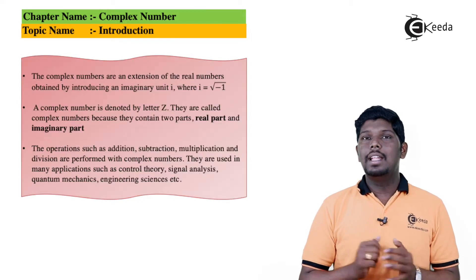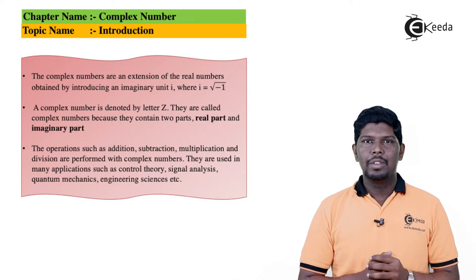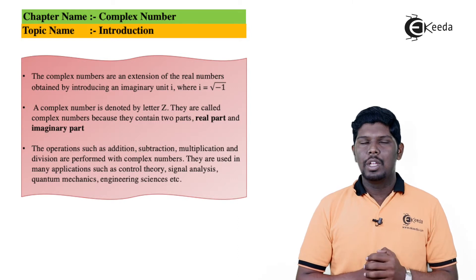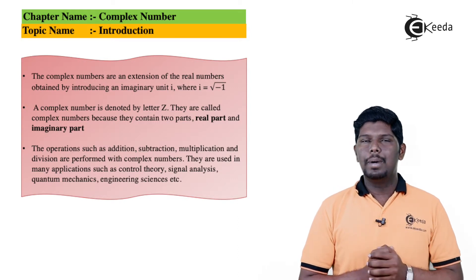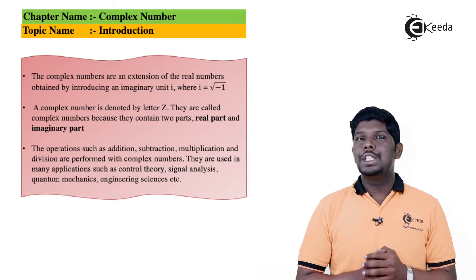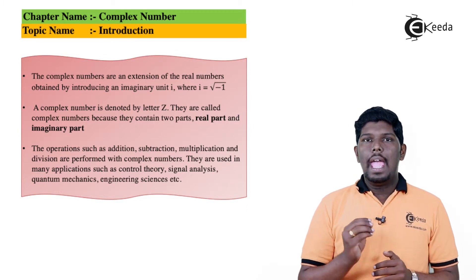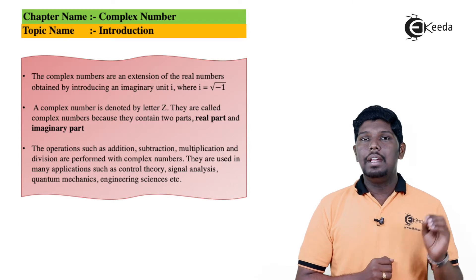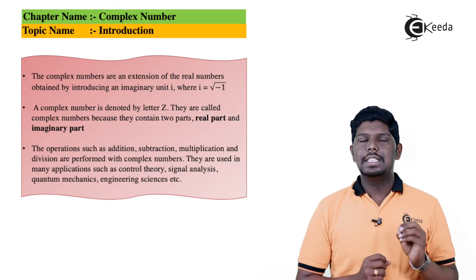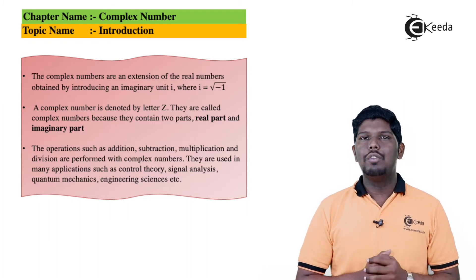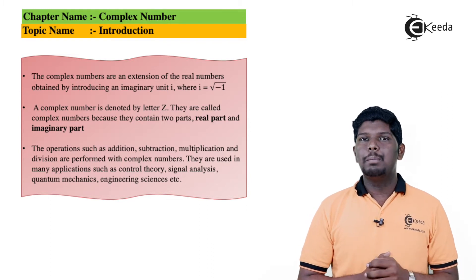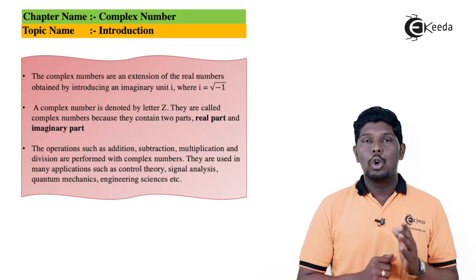Complex numbers are nothing but the extension of real numbers which are further obtained by adding an imaginary term, that is i. We can define a complex number as a part of real number as well as imaginary number. A complex number is always denoted by the alphabet z. All operations like multiplication, addition, subtraction, and division can also be performed in case of complex numbers.